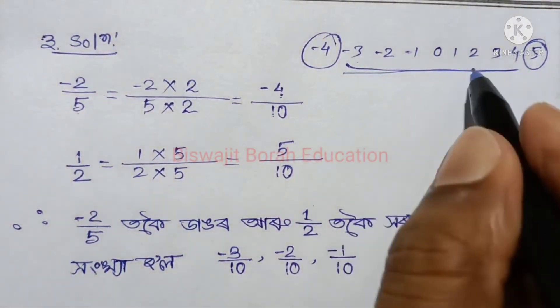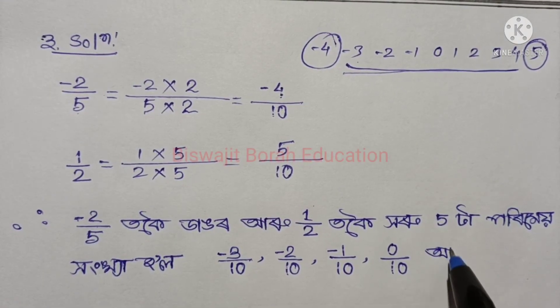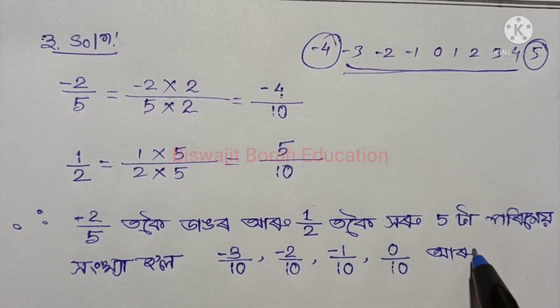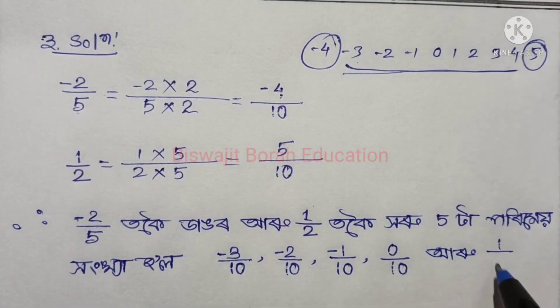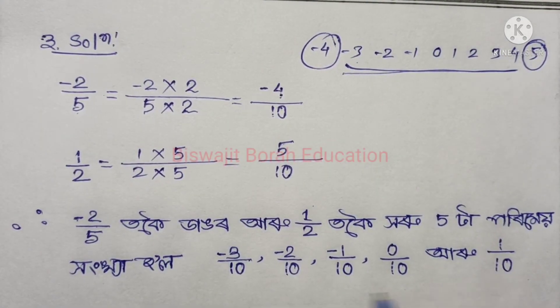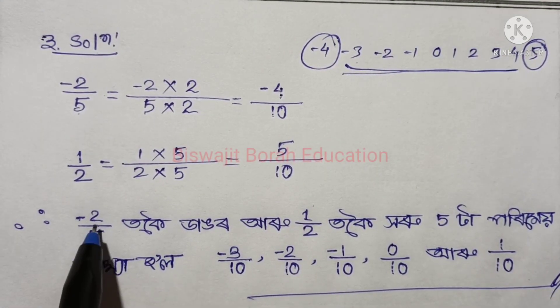A 1 by 10 and 1 by 10. So the value of minus 2 by 5 is equal to 1 by 2.